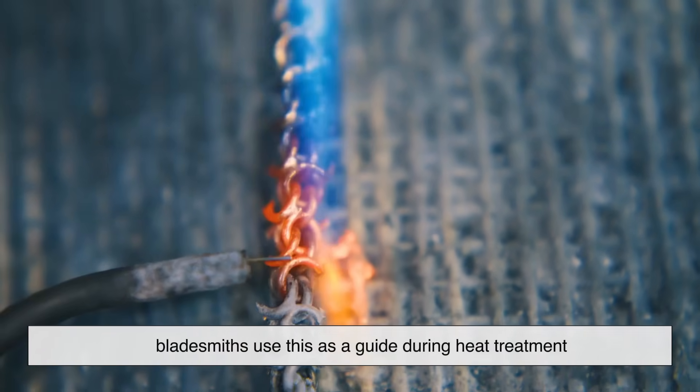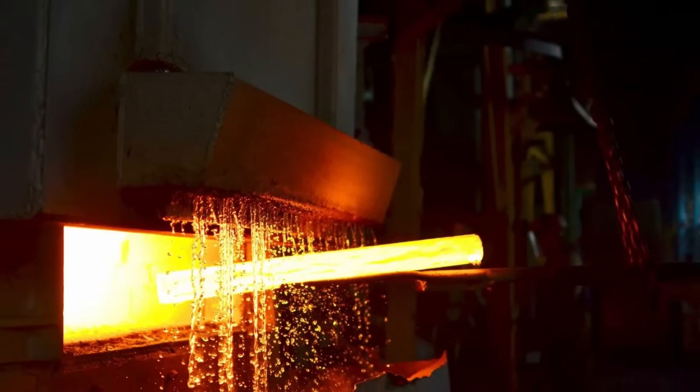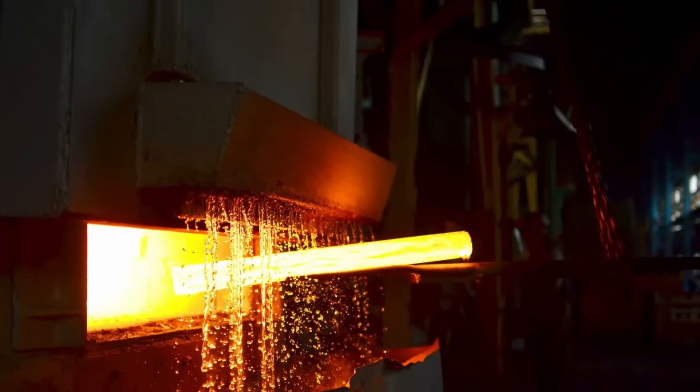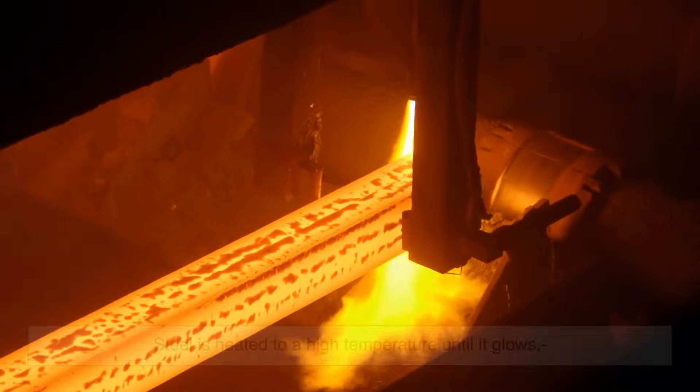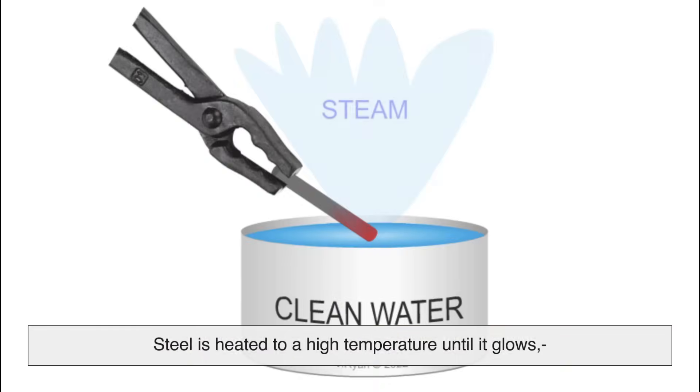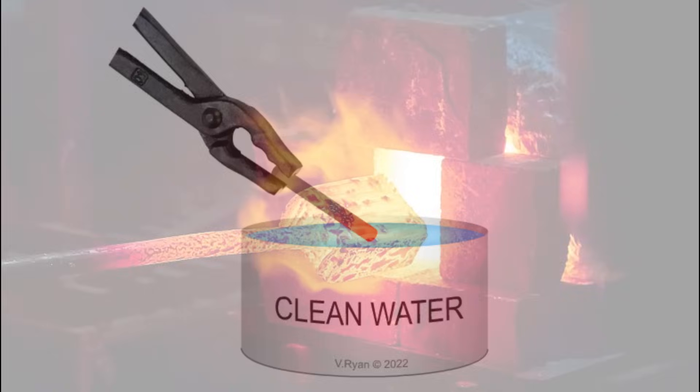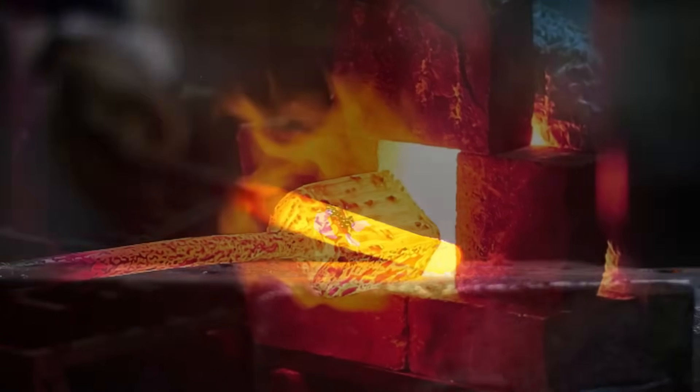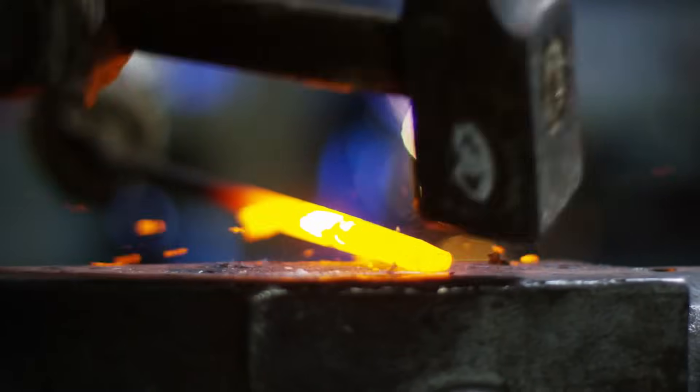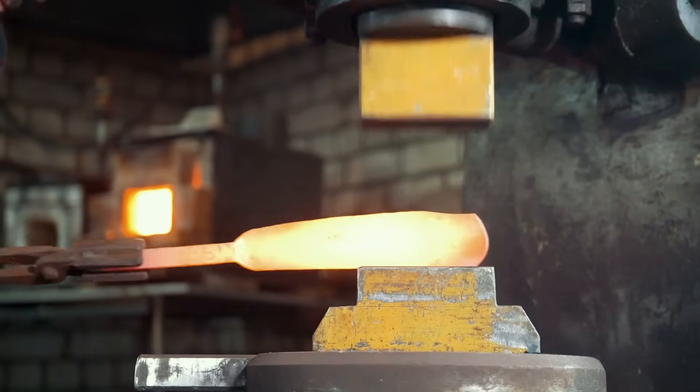This brings us to a key idea: heat treating. Heat treating involves heating and cooling steel in precise ways to achieve specific mechanical properties. There are three main steps: hardening, tempering, and sometimes annealing. First, steel is heated to a high temperature until it glows, then rapidly cooled or quenched in oil or water. This locks in a very hard but brittle structure. Then comes tempering, where the steel is gently reheated to a lower temperature. This reduces brittleness and adds toughness. And guess what? Those temper colors we just talked about—that's how a skilled smith knows when the steel is just right. No fancy thermometers needed, just a trained eye and the color of the surface.